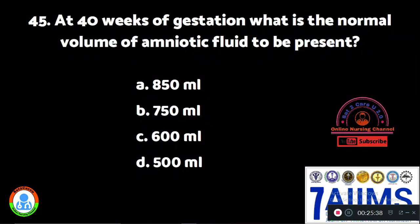Question 45: At 40 weeks of gestation, what is the normal volume of amniotic fluid? Option A: 850 ml. Option B: 750 ml. Option C: 600 ml. Option D: 500 ml. The right answer is Option C, 600 ml. This is the amount of amniotic fluid that should be present at full term.